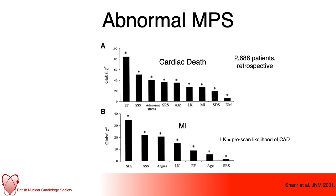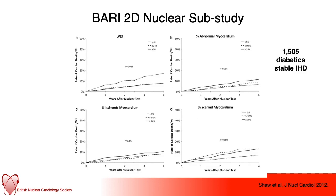Breaking that down by cardiac death versus myocardial infarction in the same study of nearly 2,700 patients: ejection fraction was unsurprisingly the strongest predictor of cardiac death, followed by the Summed Stress Score. However, the strongest predictor of myocardial infarction was the Summed Difference Score — the ischaemic burden — which is very intuitive and reassuring to see in the data. The BARI 2D nuclear sub-study of 1,505 patients who underwent MPS confirmed that LV ejection fraction, percentage of abnormal myocardium, and percentage of scarred myocardium all carried significant risk of cardiac death and MI over the follow-up period.